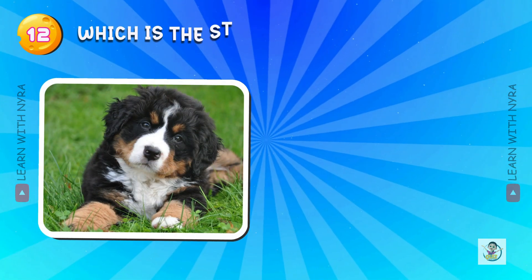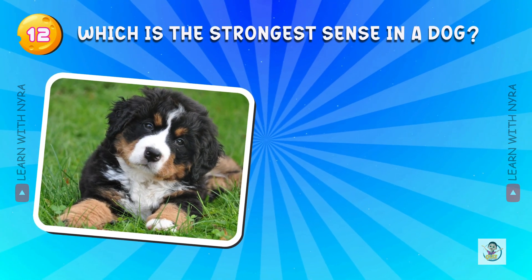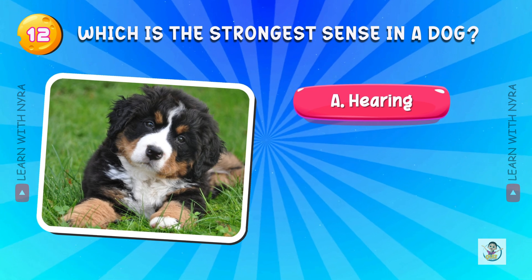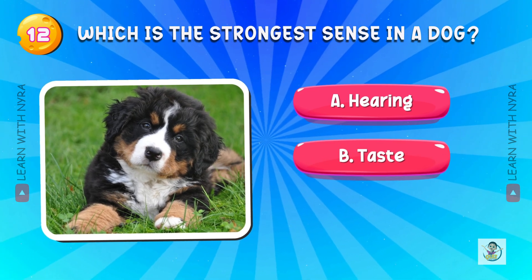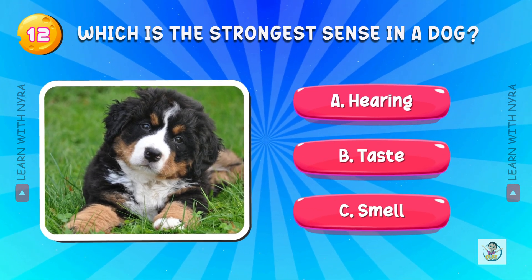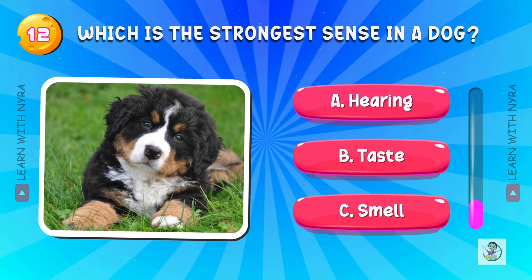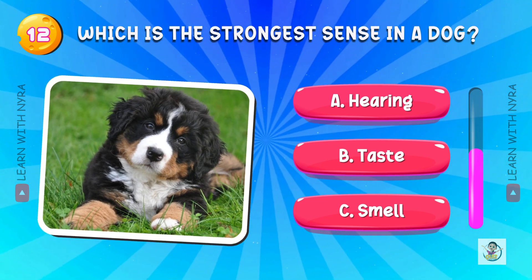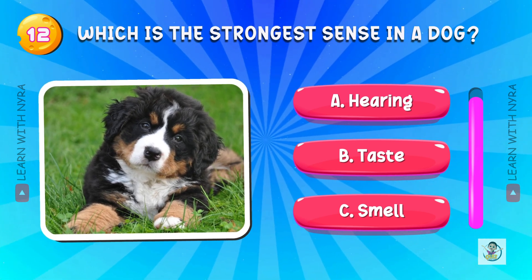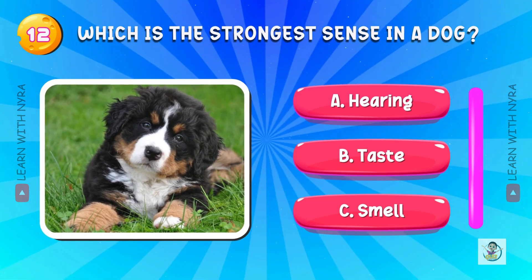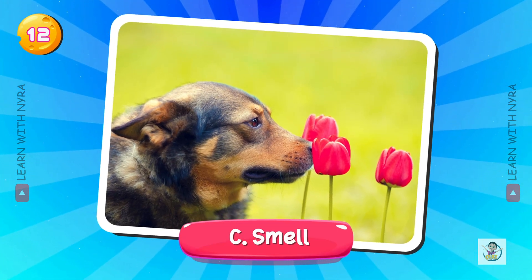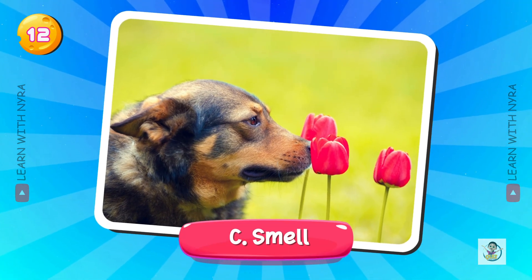Which is the strongest sense in a dog? A. Hearing, B. Taste, C. Smell. And the answer is C. Smell.